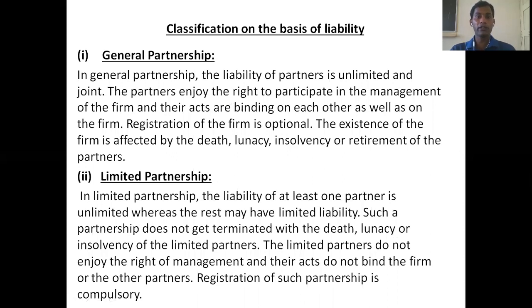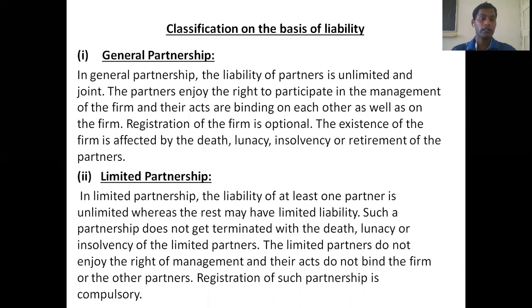Classification on the basis of liability gives us two types. First, general partnership — the liability of partners is unlimited and joint. Partners enjoy the right to participate in the management of the firm. Their acts are binding on each other as well as on the firm. Registration is optional, not compulsory. The existence of the firm is affected by the death, insolvency, or retirement of any partner.